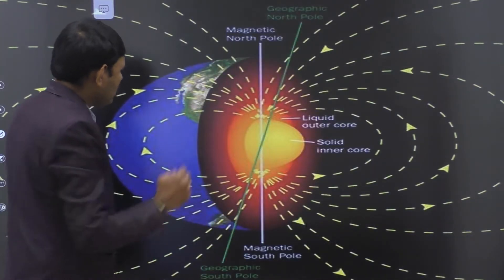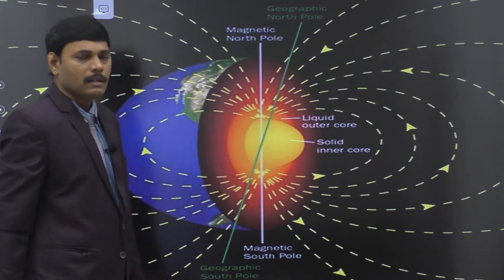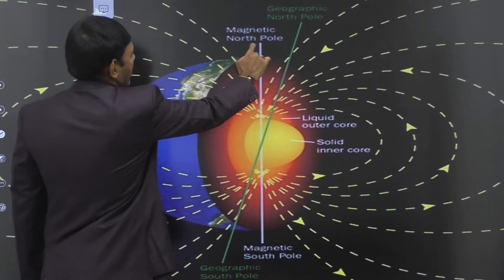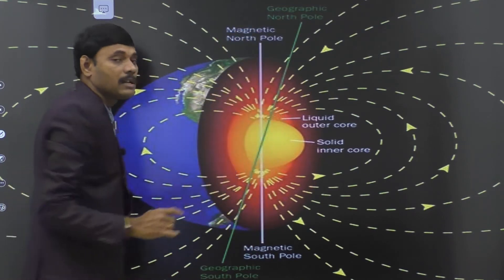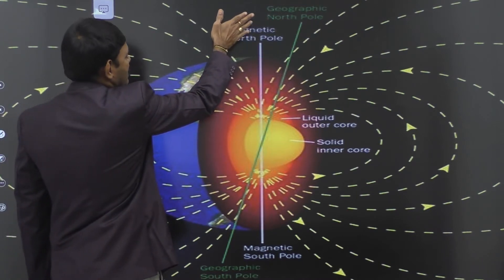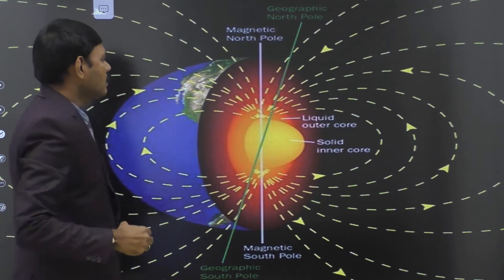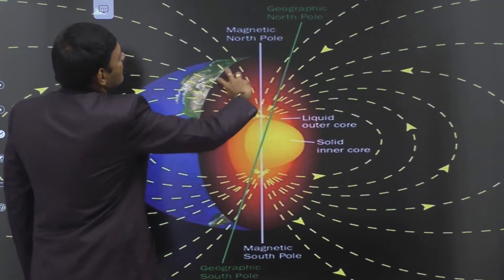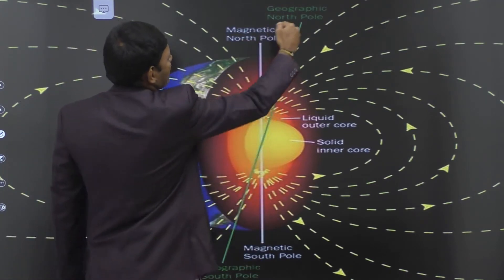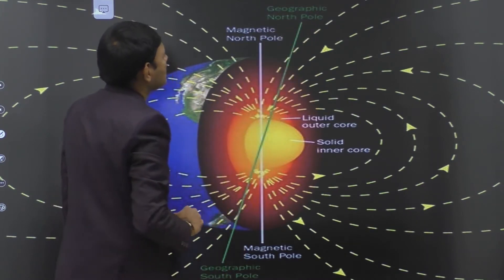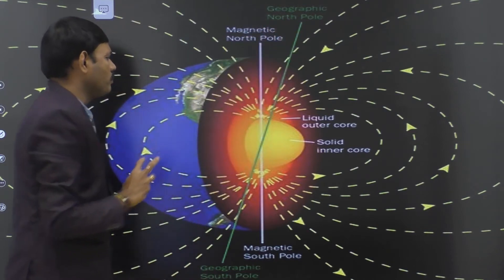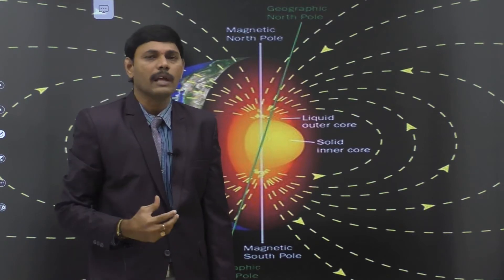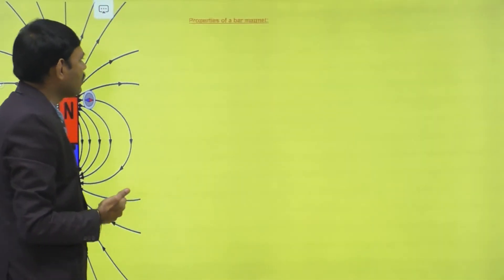Earth is a natural huge magnet. Here I show a cross-sectional image of the earth along the line joining the poles. This is the geographical north pole and this is the geographical south pole. Earth has natural magnetism, with geographical and magnetic north and south poles making some angle between them. We will discuss this very clearly in coming sessions.